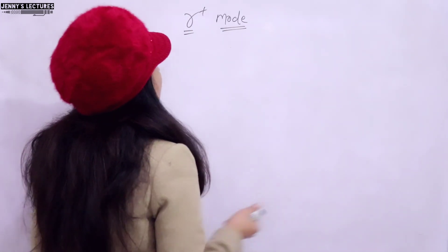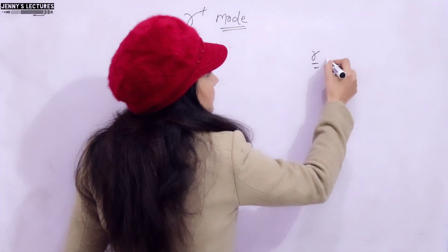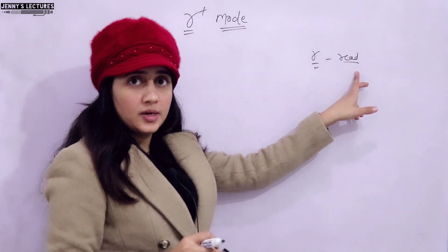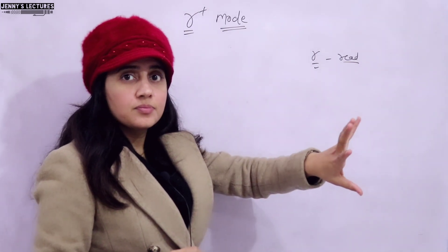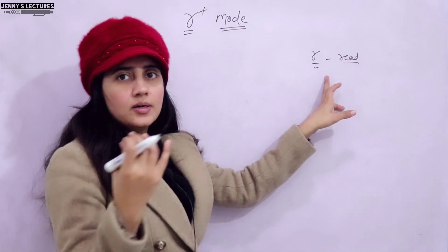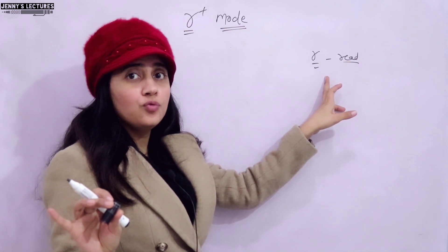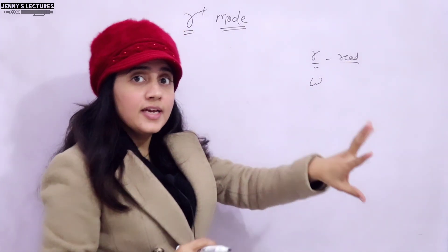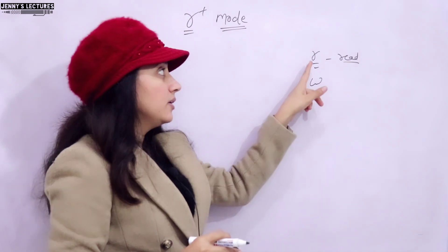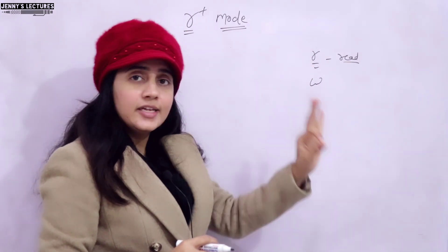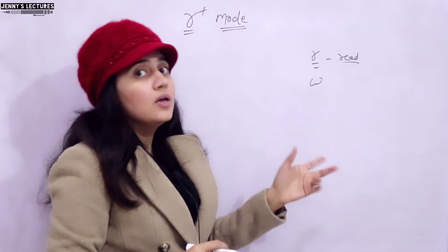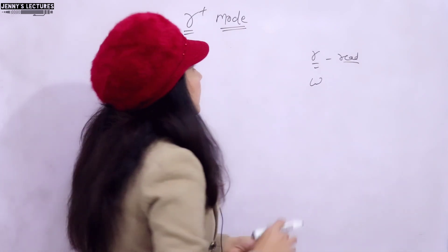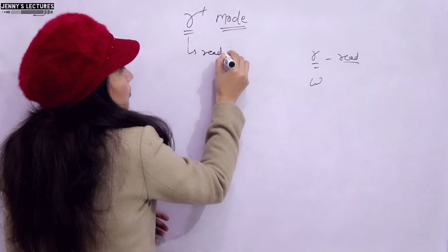Let's see what r plus mode is. In r mode (read mode), you can only read the file's content. If the file doesn't exist, fopen returns null — it will not create a new file. In w mode (write mode), if the file doesn't exist it creates a new file and opens it. But in r mode, if the file doesn't exist, it gives an error.